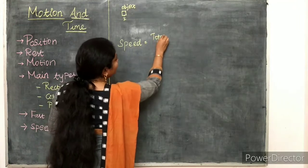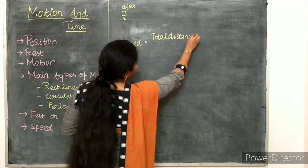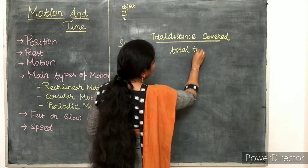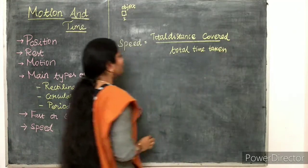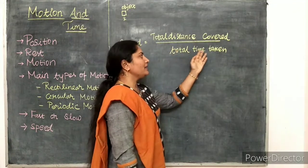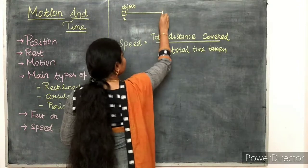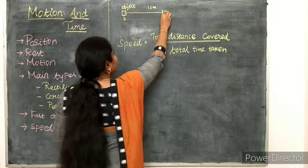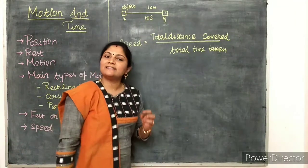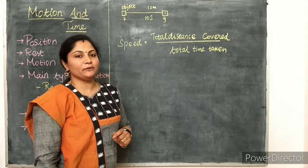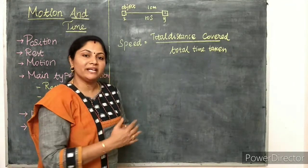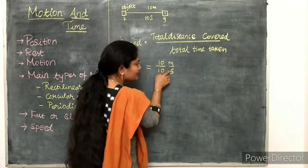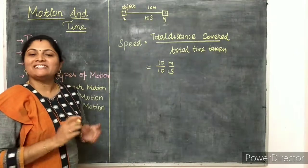Speed is equal to total distance covered divided by total time taken. For example, if an object travels a distance of 10 meters and reaches point Y in 10 seconds, the speed is 10 meters divided by 10 seconds, which equals 1 meter per second. Meter per second is the SI unit of speed.